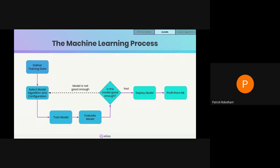Here's the machine learning process: gather training data, select a model algorithm and configure it, train the model, evaluate it, then ask — is the model good enough? If not, select a different modeling algorithm, adjust the configuration, or gather more training data. Typically data scientists will spin around this loop for a while before reaching a model good enough to deploy. If you don't use AutoML, you'll still follow this approach — just creating one Jupyter notebook per algorithm.